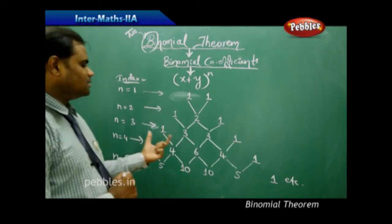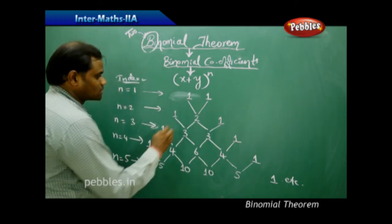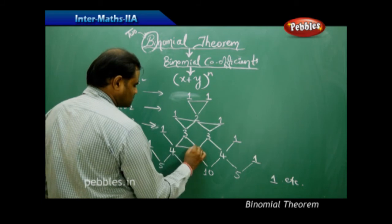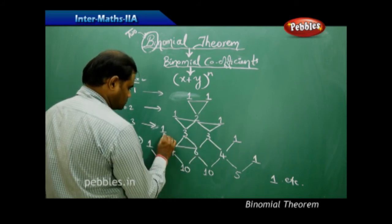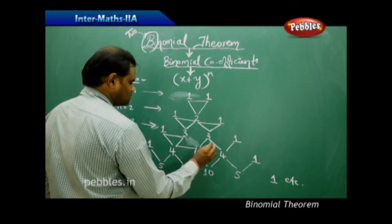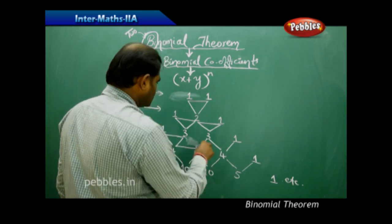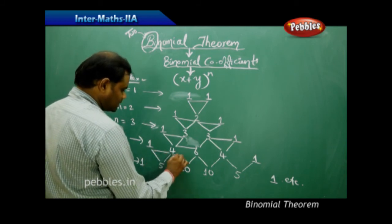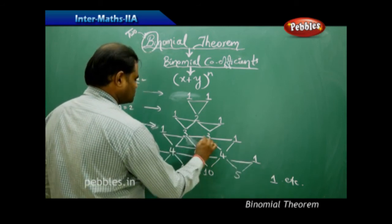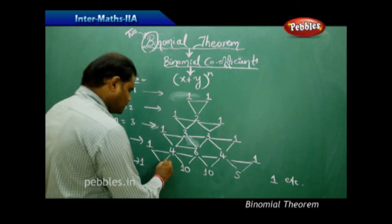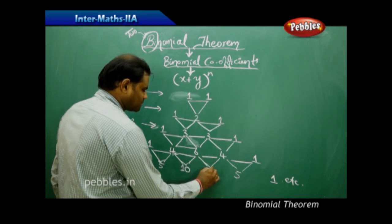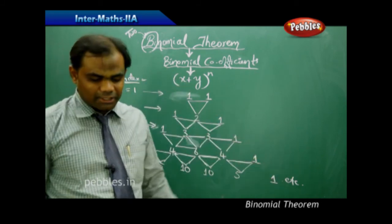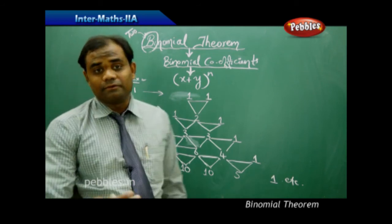This is how the binomial coefficients are constructed in a continuous process. When you join all these rows together, this triangular arrangement is called Pascal's triangle, which we are going to discuss further in this session.